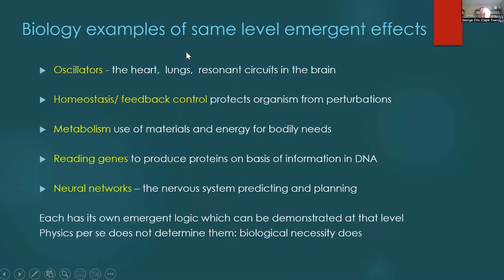Some biological examples of same-level emergence: oscillators such as the heart and lungs, resonant circuits in the brain, homeostasis feedback control protecting organisms from perturbations, metabolism for bodily needs, reading genes to produce proteins based on DNA information, and neural networks predicting and planning. Each has its own emergent logic demonstrable at that level. Physics per se does not determine them — biological necessity does. I've tried to show the big picture whereby biological necessity shapes what happens at all levels.